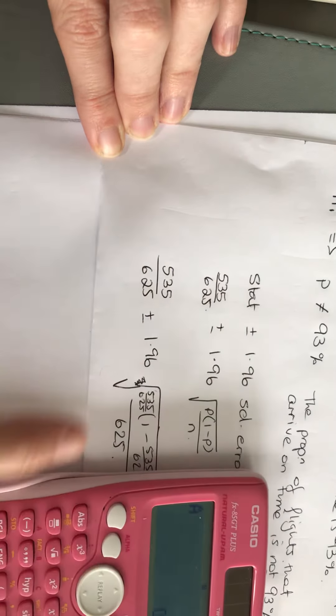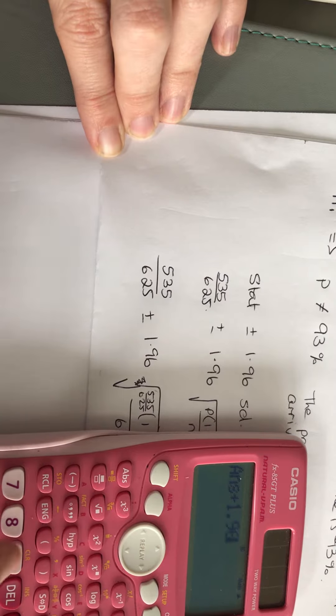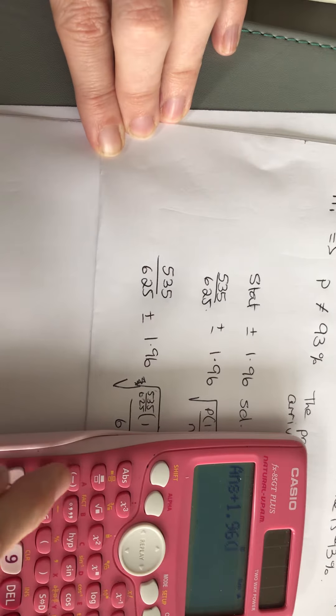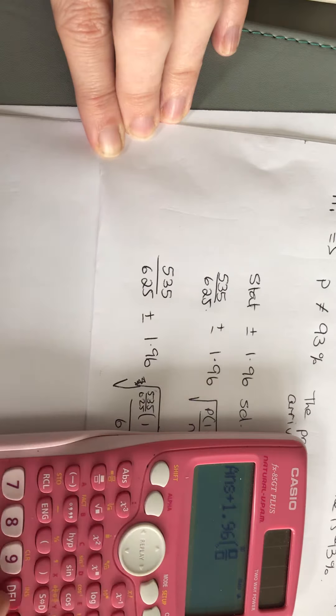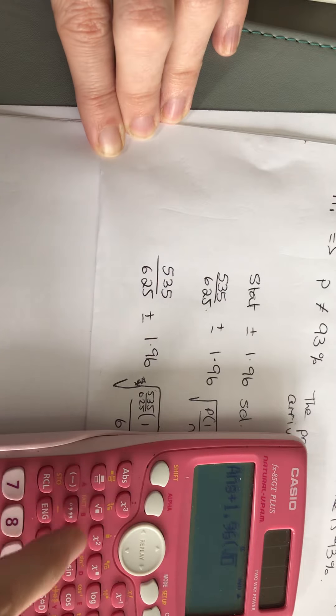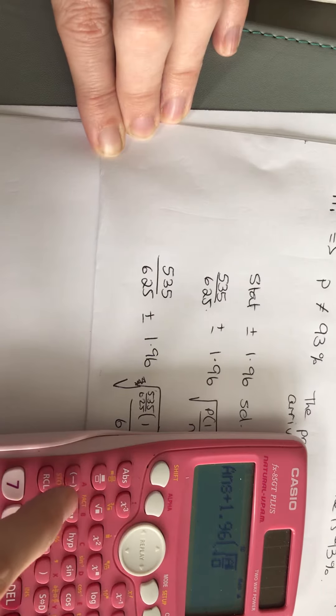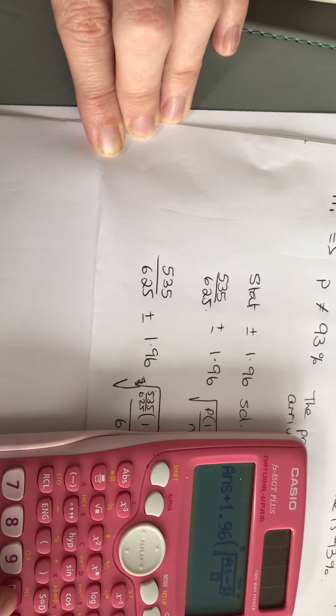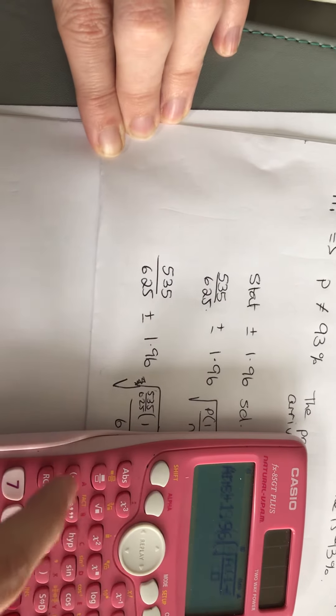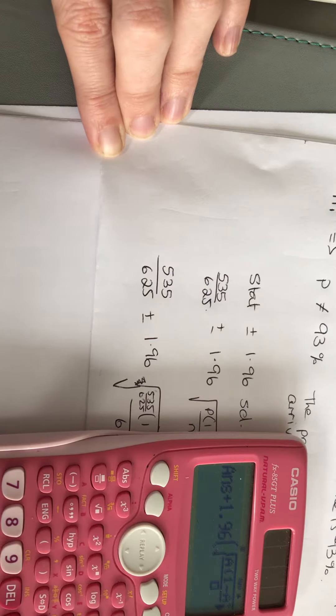And I'm going to add on plus my 1.96 bracket. I need to do the square root. Square root of a bracket 1 minus a, all over 625.